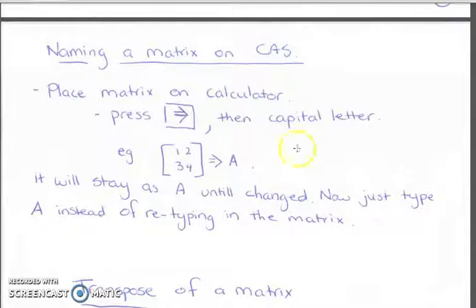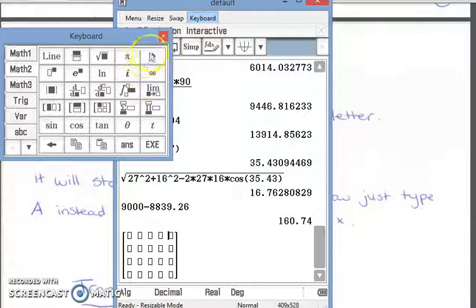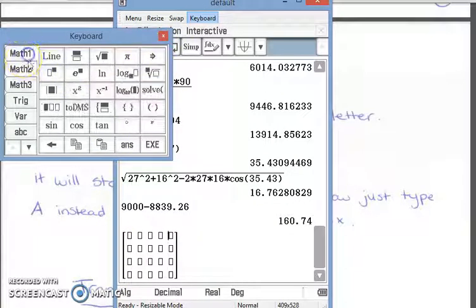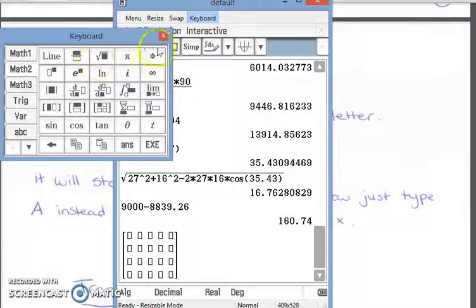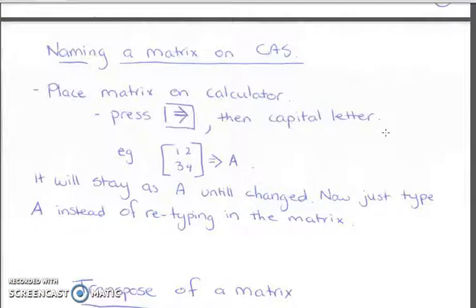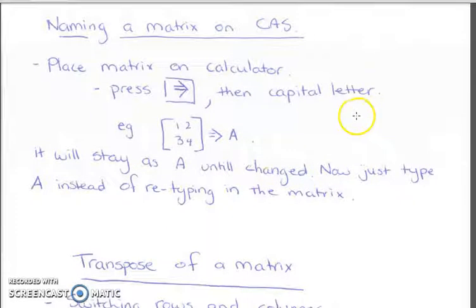You can also name your matrices by pressing this arrow, which can be located right here on math 1, math 2, math 3. It's always in this top location, and then using a capital letter. Make sure you use capital letters when naming matrices. Sometimes it's beneficial to name them if you're using them multiple times.